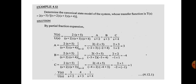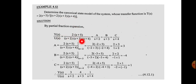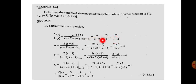Let us do a problem. Determine the canonical state-space model of the system whose transfer function is T(s) = 2(s+5) / [(s+2)(s+3)(s+4)]. In order to get the canonical state model, we need to change it into the partial fraction expansion form: A/(s+2) + B/(s+3) + C/(s+4), and find the values of A, B, and C.